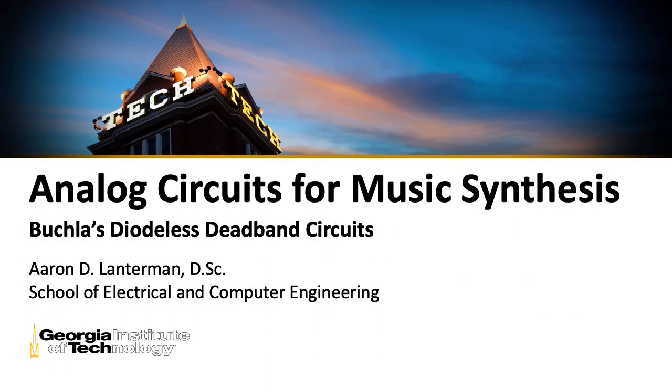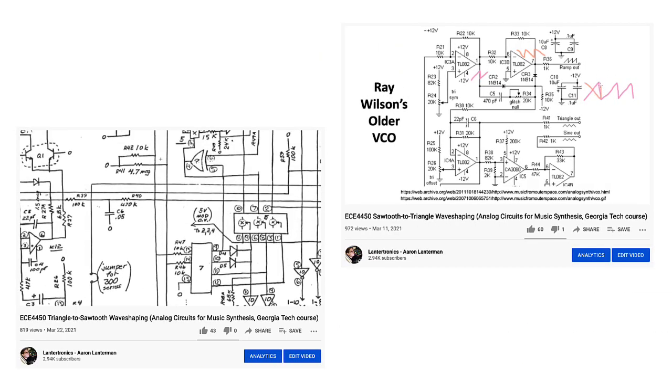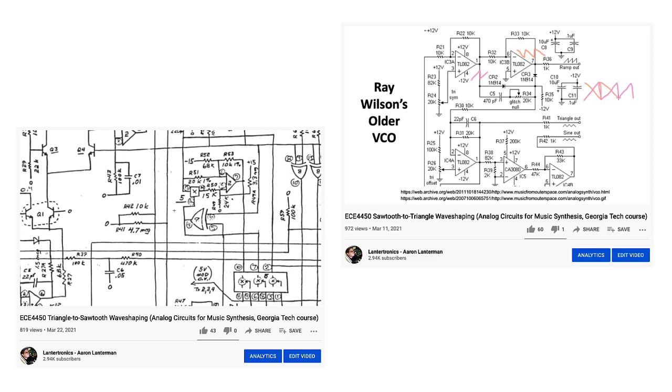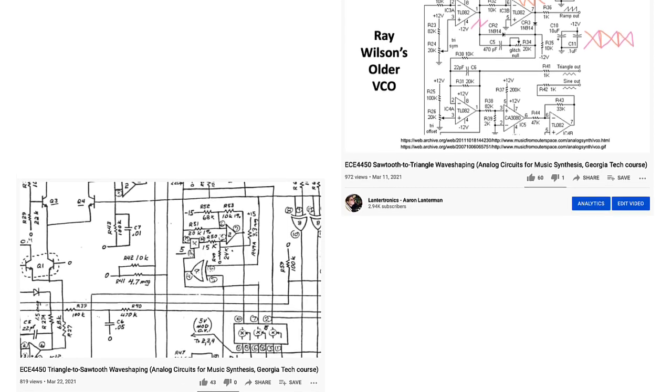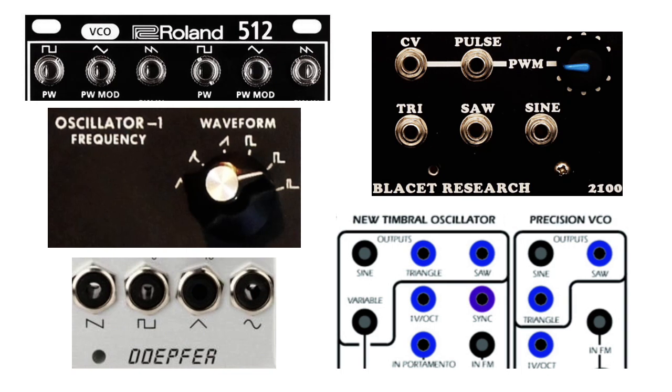So far, we've looked at a lot of wave shaping circuits that take triangles and turn them to sawtooth and sawtooth and turn them to triangles. Those are all fairly standard circuits that you'll find in a lot of synthesizers, and those generate the standard set of analog waveforms.